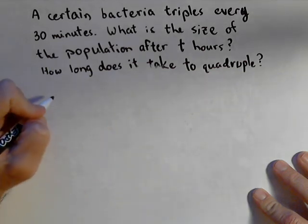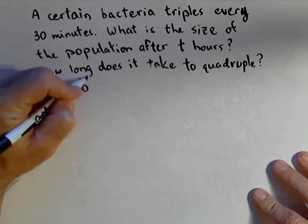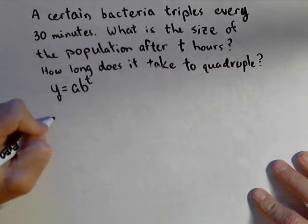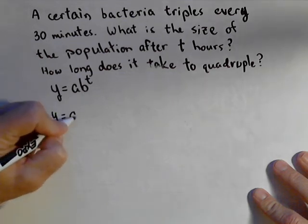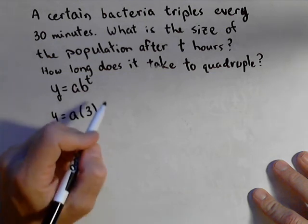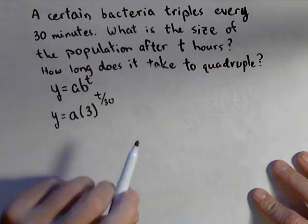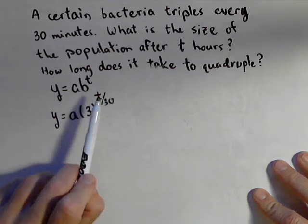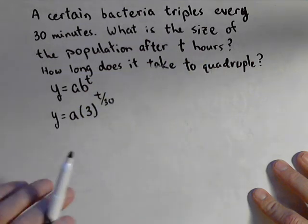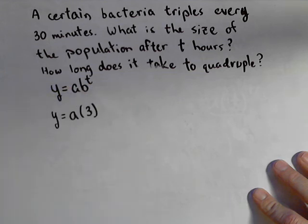First off, let's talk about building our model. I'm going to use the form y equals ab to the t, because it makes doubling, tripling, quadrupling, and half-life very easy to deal with. So I know a is my initial amount, and it's going to triple after 30 minutes. Typically we put t over 30, but the problem is that t would then be in minutes, but we were asked to do it in hours. So I'm going to need to change this just a little bit.